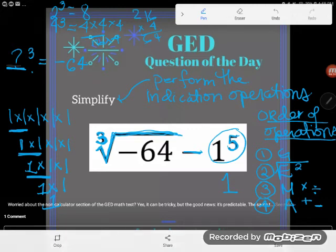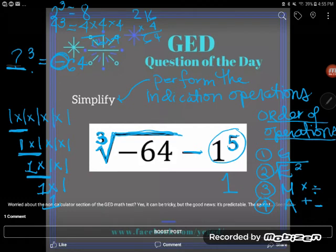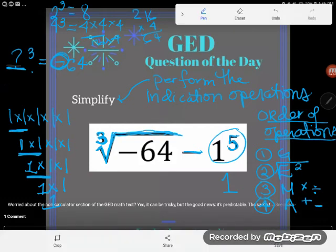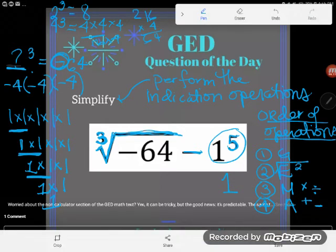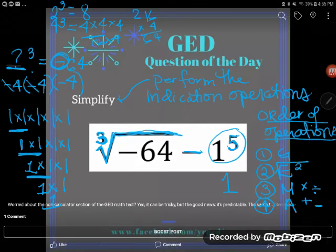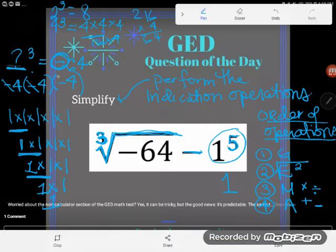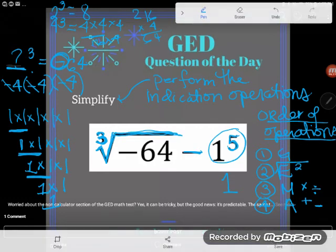But be cautious, notice this was not just regular sixty four, this was negative sixty four. So let's think about this. Negative four times negative four times negative four, if I cubed negative four would I get negative sixty four? We already did the math for four times four times four, we know that's sixty four. A negative times a negative is a positive, and if I multiply that by another negative, negate it again, guess what, that would be negative sixty four.